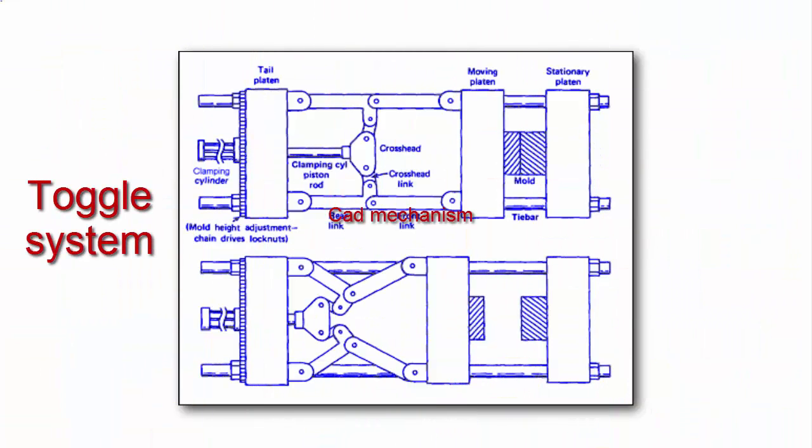In injection process, clamping force of injection machine is forced to keep mold closed when injection machine pushes molten plastics into injection mold.